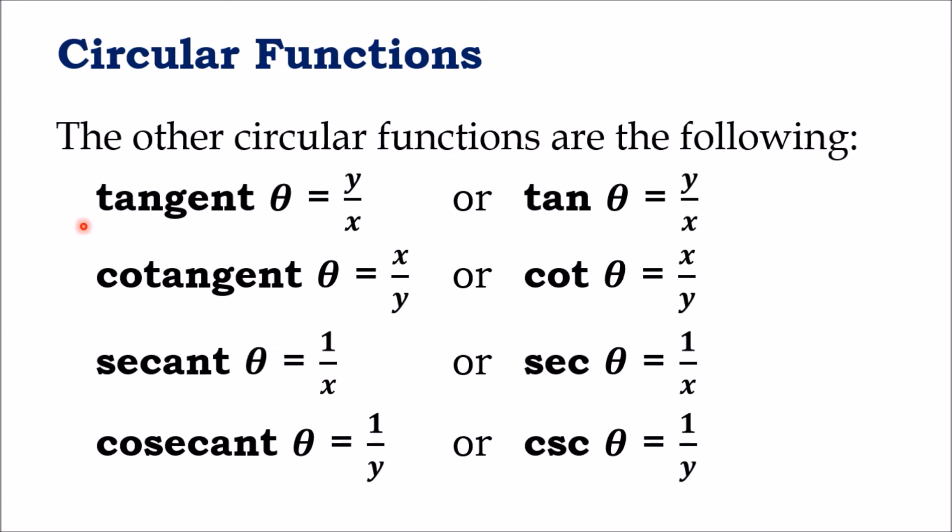We have tangent theta equals Y over X, cotangent theta equals X over Y, secant theta equals 1 over X, and cosecant theta equals 1 over Y.